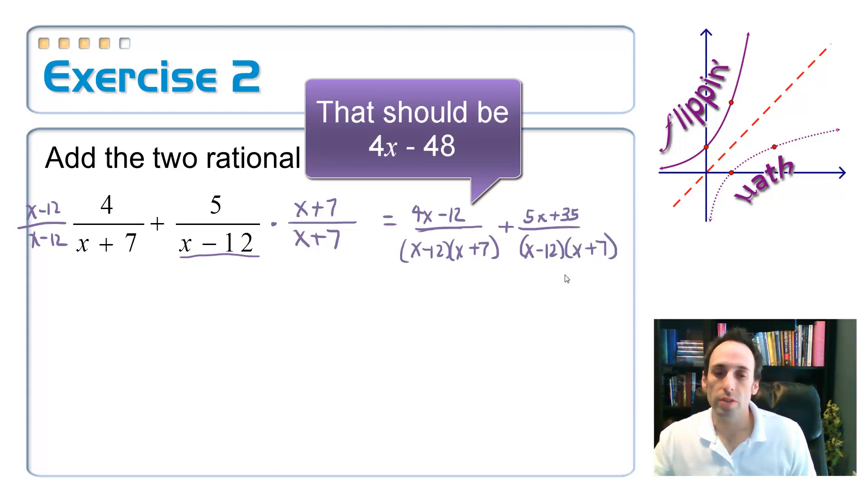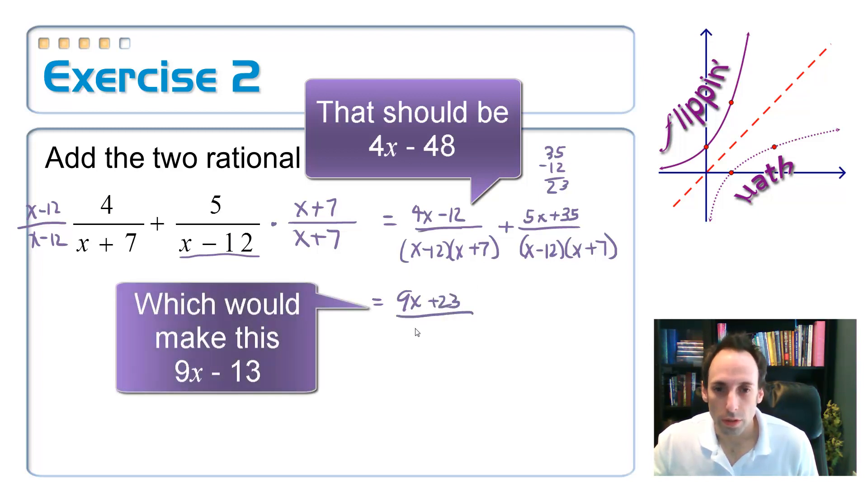So I have 5x plus 35, and then the same denominator, x minus 12 times x plus 7. Keep the denominators the same and then just add up the tops. So when I add up the tops, I get 9x, and then what's 35 minus 48, plus 23, all over the common denominator, x minus 12 times x plus 7.